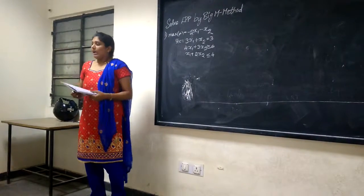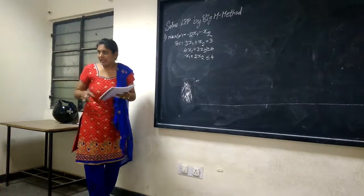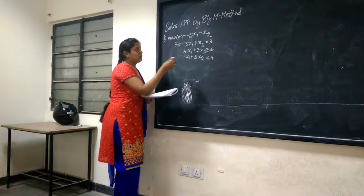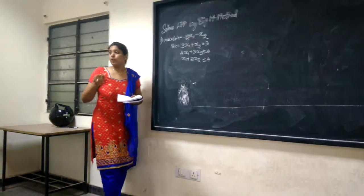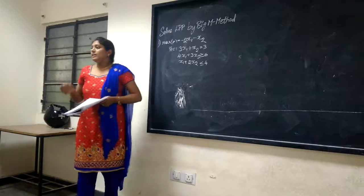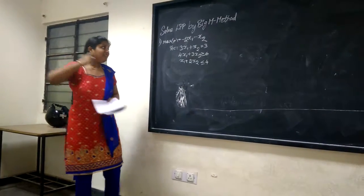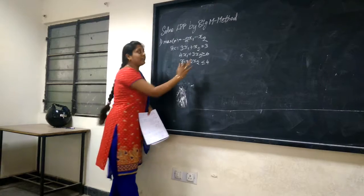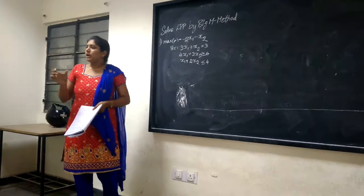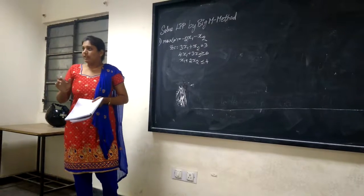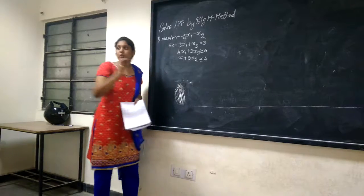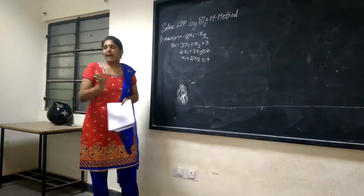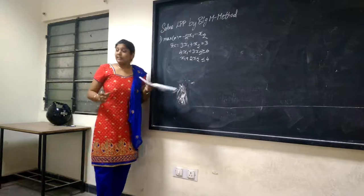For each inequality sign, there are specific rules. If we have a greater than or equal to sign, we remove the surplus variable and add the artificial variable. The surplus variable is the number removed or added to make the equation an equality when we have a greater than or equal to sign. If we have less than or equal to, the number added is called the slack variable.